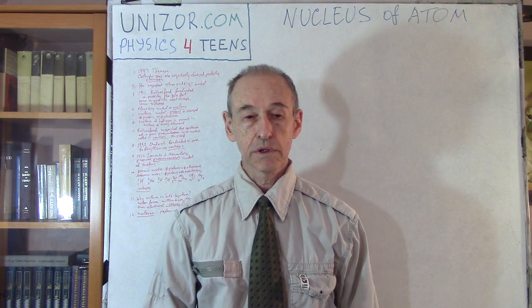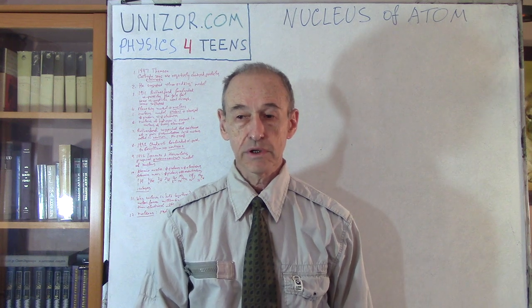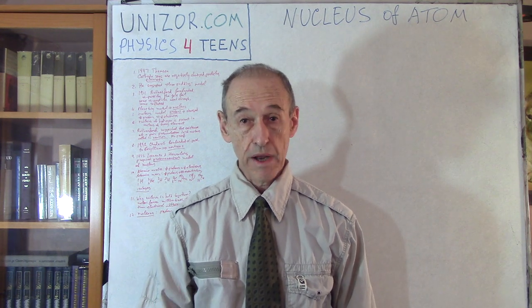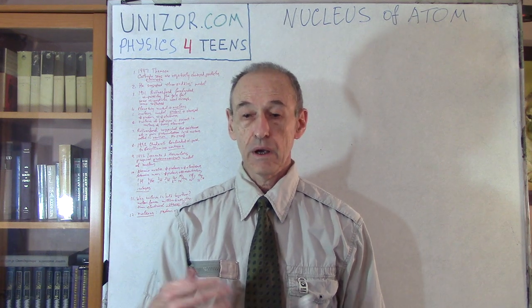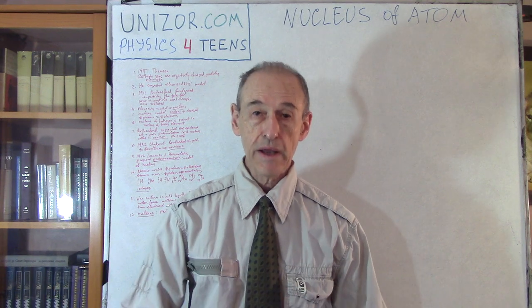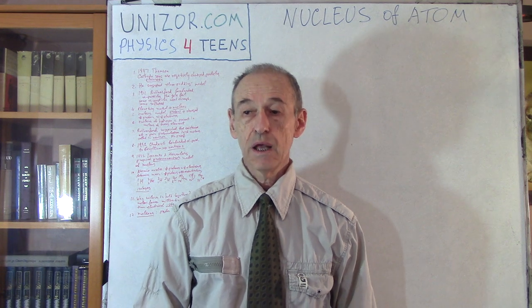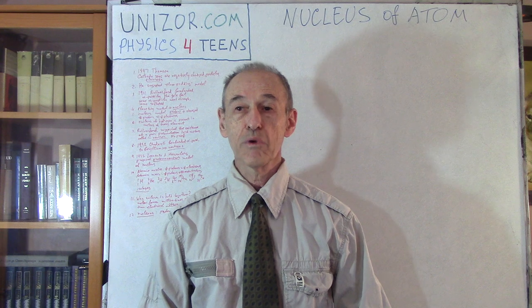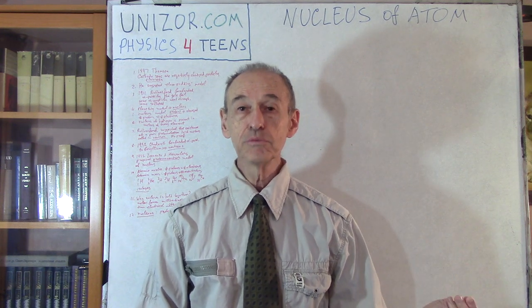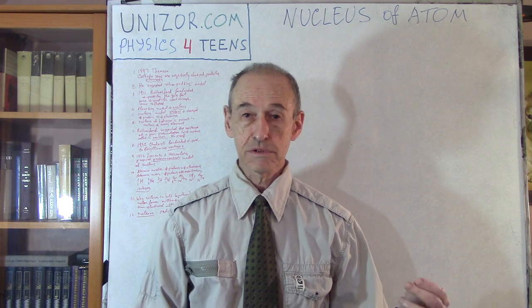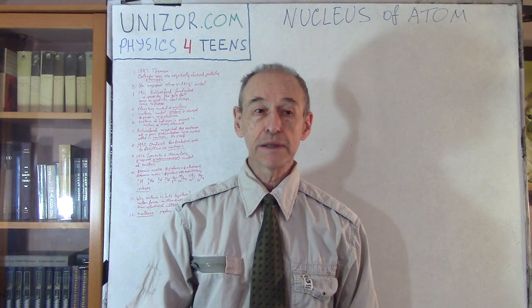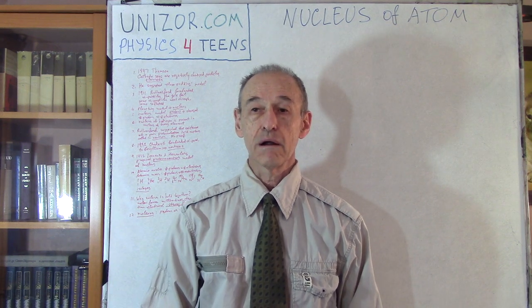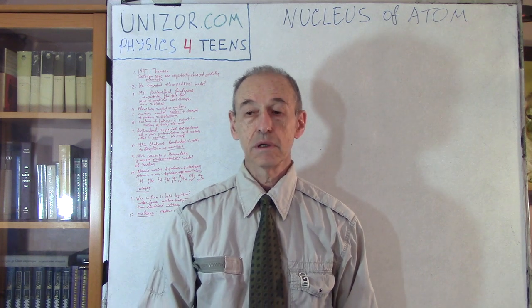One of the first things his group was involved with was related to radioactivity — the so-called radioactive decay. It was observed that certain elements like uranium, thorium, or radium emitted certain things. They were trying to investigate what these things were, and they divided them into three categories: alpha, beta, and gamma rays. It turned out much later that alpha rays were actually the nucleus of helium, a combination of two protons and two neutrons. Beta rays were discovered later to be electrons. And gamma rays are electromagnetic radiation of very high frequency — very penetrating, with a shorter wavelength than the visible spectrum.